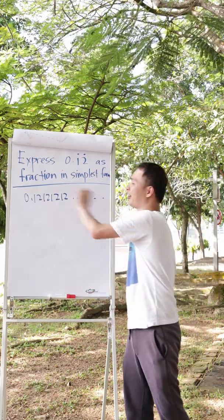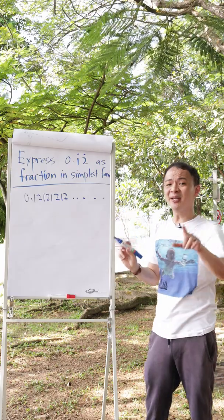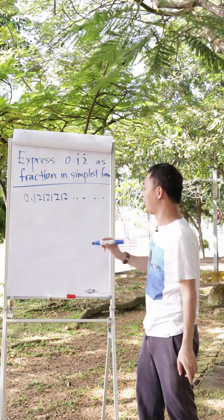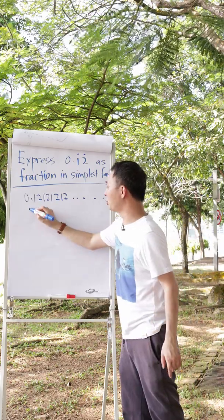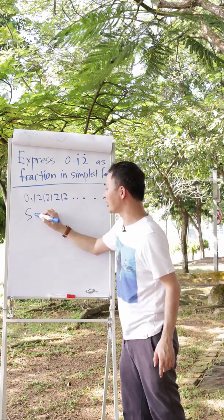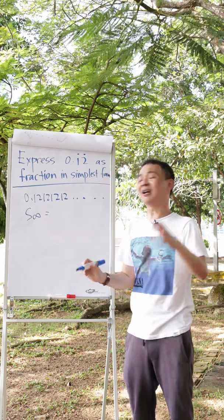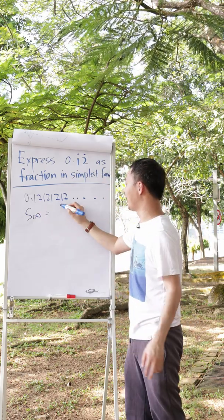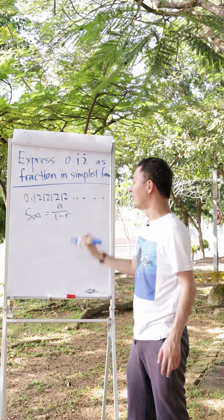Whenever you see a recurring decimal in math, it means sum to infinity. So when you see this, you need to link it to sum to infinity. The formula for sum to infinity is a over 1 minus r.